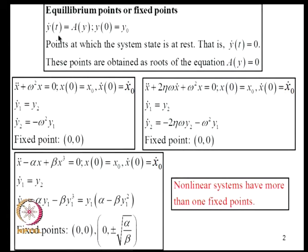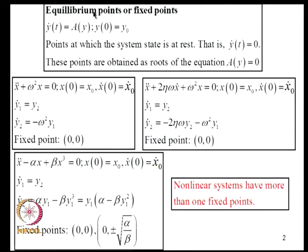We consider dynamical systems of the form Y-dot equal to A — these are autonomous systems. Y is an N×1 vector and A is a vector of functions. Since time doesn't appear explicitly, we say it is an autonomous system. We call points at which Y-dot equals zero as fixed points — the equilibrium points — and these are obtained as roots of the equation A(Y) = 0.